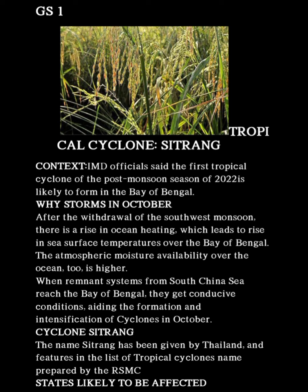A remnant system from the South China Sea reached the Bay of Bengal and had conducive conditions. Conducive conditions aided the formation and intensification of the cyclone. Intensification of a cyclone means an increase in the maximum sustained winds of a tropical cyclone of at least 30 knots in a 24-hour period. This is the intensification of cyclones in October.